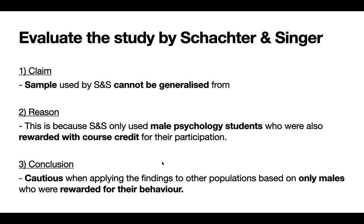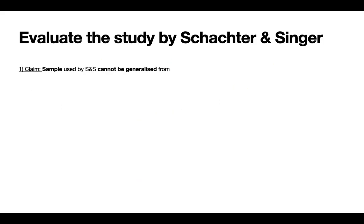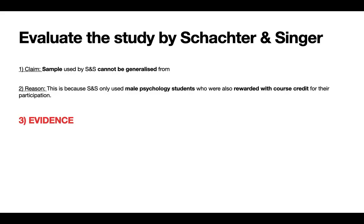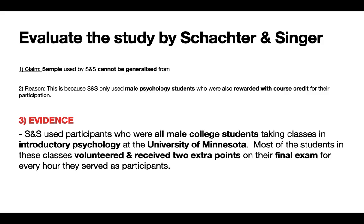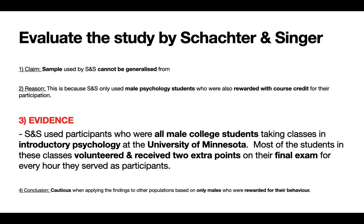Now this is the level one answer — the most basic answer you could possibly give. How can you, especially for A2 students, develop this and bring it to the next level? For level two, you want to add a bit of evidence. The claim and reason remain, but now I add: Schachter and Singer used participants who were all male college students taking introductory psychology at the University of Minnesota. Most of the students volunteered and received two extra points on their final exam for every hour they served as participants. I've given evidence clearly from the study to support my claim and reason. This is the extra cheese I'm adding to my burger.